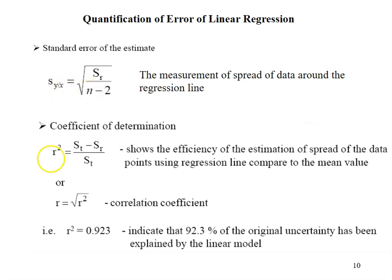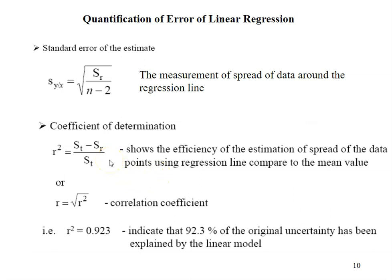Next we have the coefficient of determination, represented by r² = (st minus sr) divided by st. This concept shows the efficiency of the regression line compared to simply using the mean value. The difference st minus sr shows the improvement or error reduction due to describing the data with a straight line rather than as an average value.